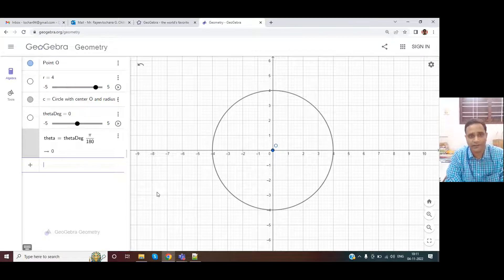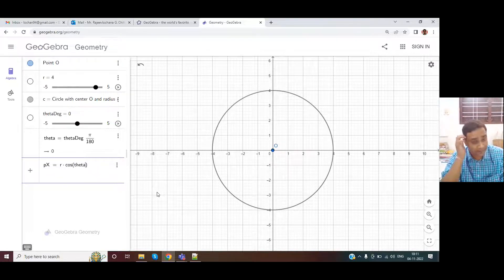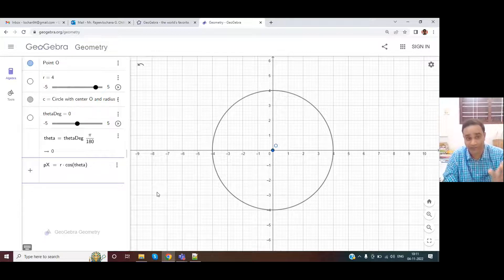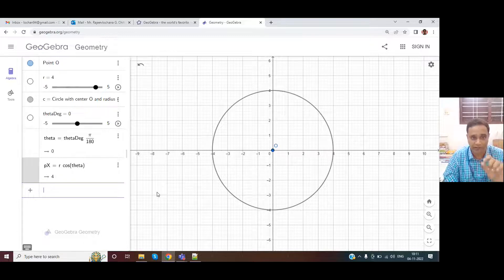Now, what do we do? We want to get Px equals R into cos of theta. Please remember, it is theta, not theta degree because cos theta assumes radians. So Px is a variable we have defined, which is R into cos theta.